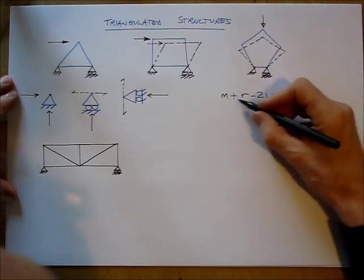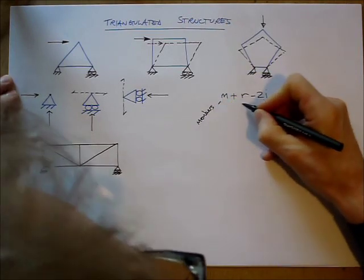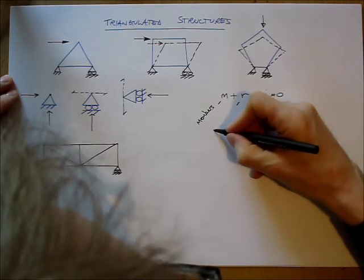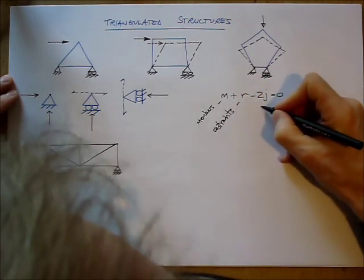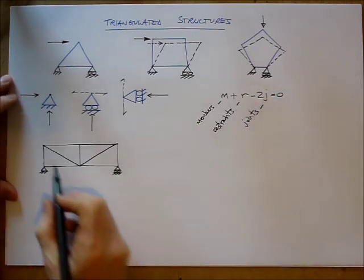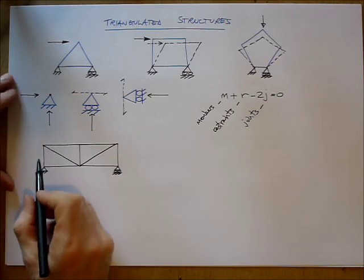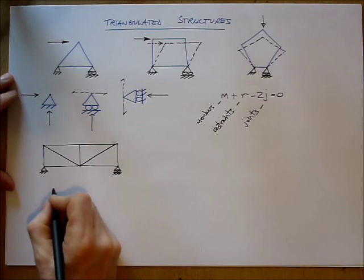In this equation, M stands for members, R stands for restraints, and J stands for joints. Again, nothing there to trick anybody. So, how many members are there for this structure? 1, 2, 3, 4, 5, 6, 7, 8, 9.